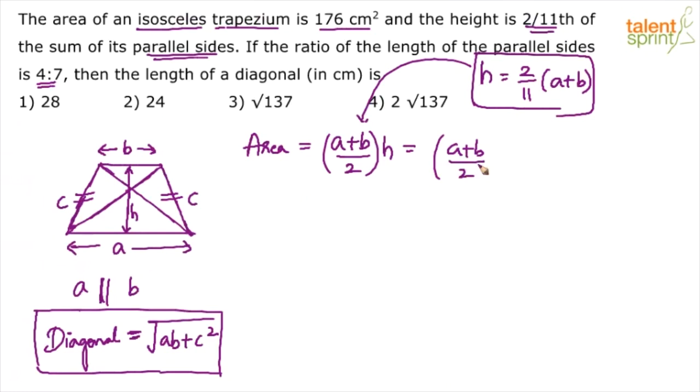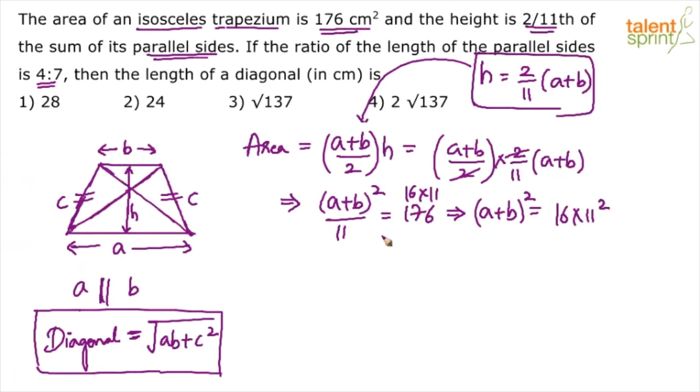So what do we get the area as? A plus B by 2 into height is 2 by 11 into A plus B. So 2 and 2 gets cancelled. We are left with what? A plus B whole square divided by 11 equals to, see the area was given as 176. So I can equate this to 176. Now simplify from this, what is A plus B? 176 can be taken as 16 into 11. So overall, you get A plus B whole square equals to 16 into 11 square. So simple calculation is A plus B, take square root on both the sides. A plus B will be equal to square root of 16 into 11 square. So square root of 16 is 4, square root of 11 square is 11, which is 44.